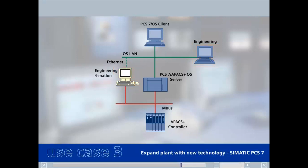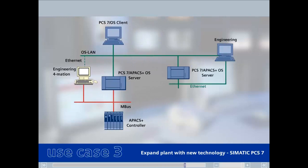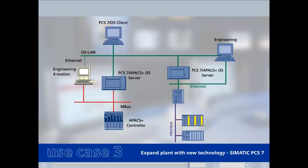In the third use case, the existing plant will be extended by a sub-plant based on Simatic PCS7. In addition to the present server, an additional PCS7 OS server will be added and connected to the OS network. Based on that connection, the operator sitting on the PCS7 OS client has a common and consistent monitoring and operating view for both parts of the plant.